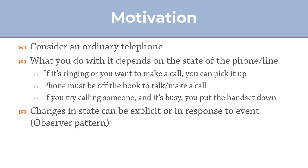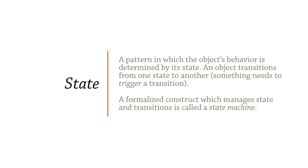Some state machines have explicit control — you query the user what they want to do and they transition from one state to another. Other systems run state machines based on external events. For example, in algo trading, you connect to a stock market and listen to events from it — that's the Observer pattern — and a state machine moves you from connecting state to connected state to where you've received initial market data, and so on.